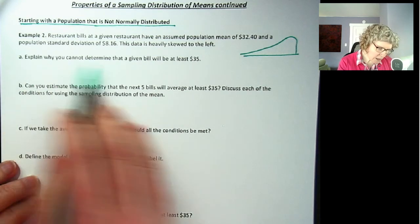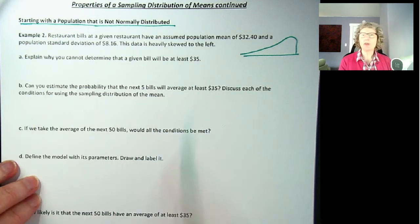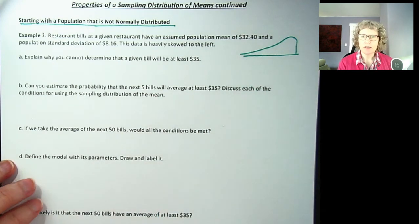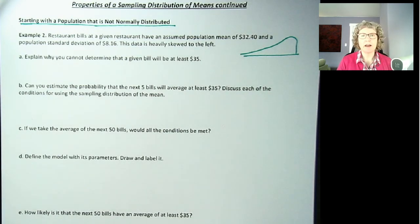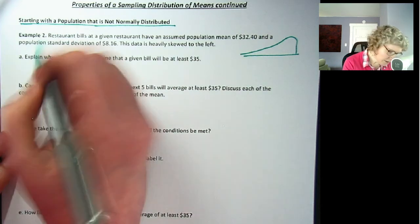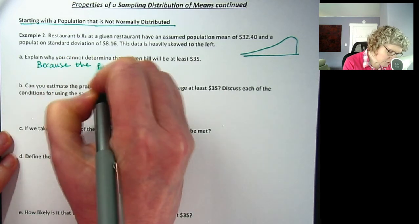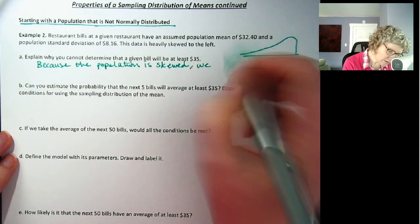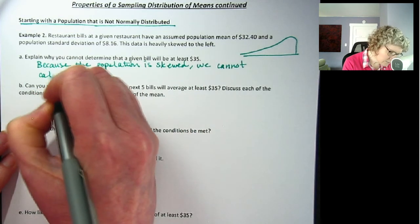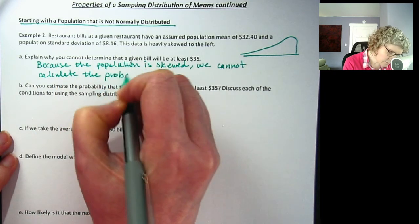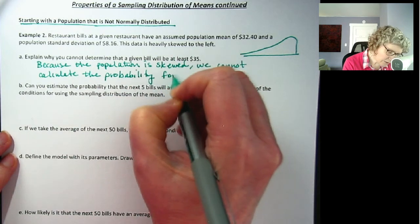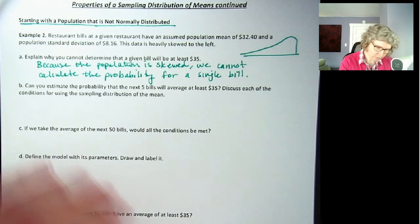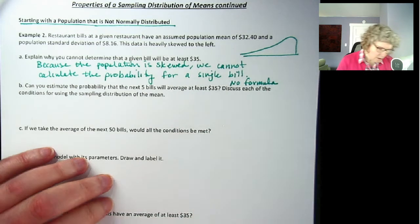The first question is, explain why you cannot determine that a given bill will be at least $35. Why can't we do a probability for this? That's because we don't have this distribution in online statbook or in Geogebra. We don't have enough information about this skewed information to find a probability. Because the population is skewed, we cannot calculate the probability for a single value. We don't have a formula for that.